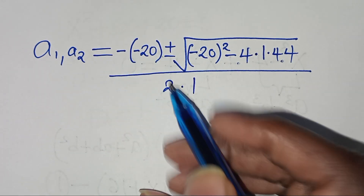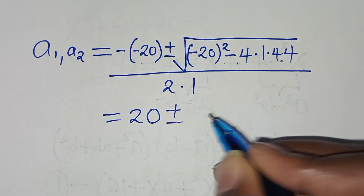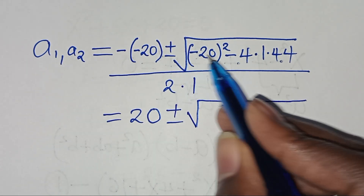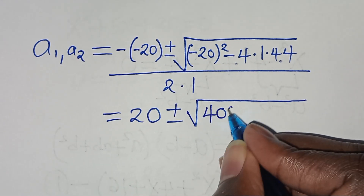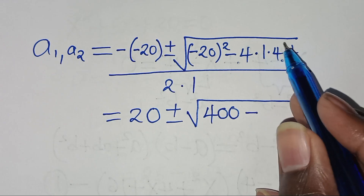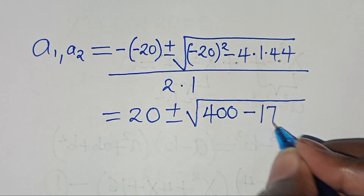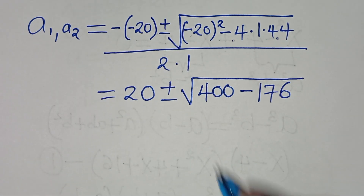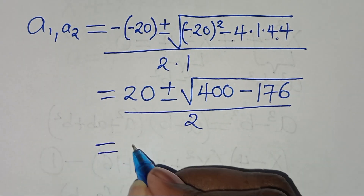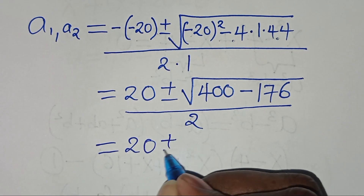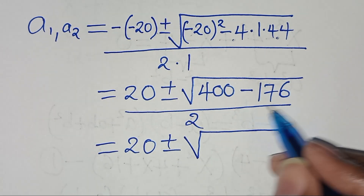So here we have minus minus 20, which is 20, plus or minus the square root of (minus 20) raised to the power of 2, which is 400. Then 44 times 4 is equal to 176, everything divided by 2. So this implies we have 20 plus or minus the square root of 400 minus 176.